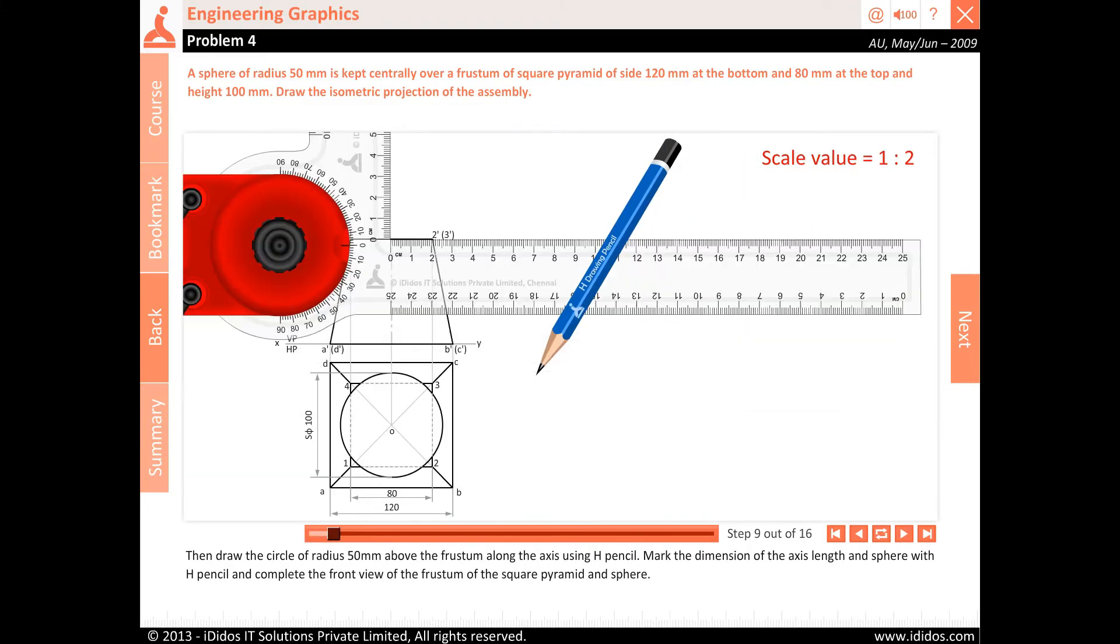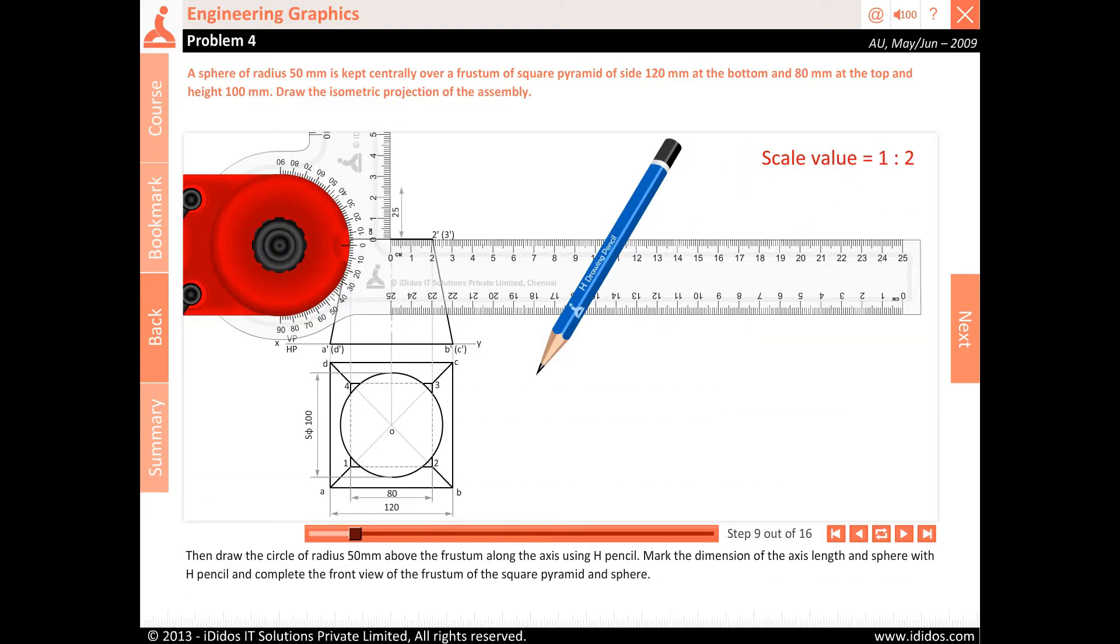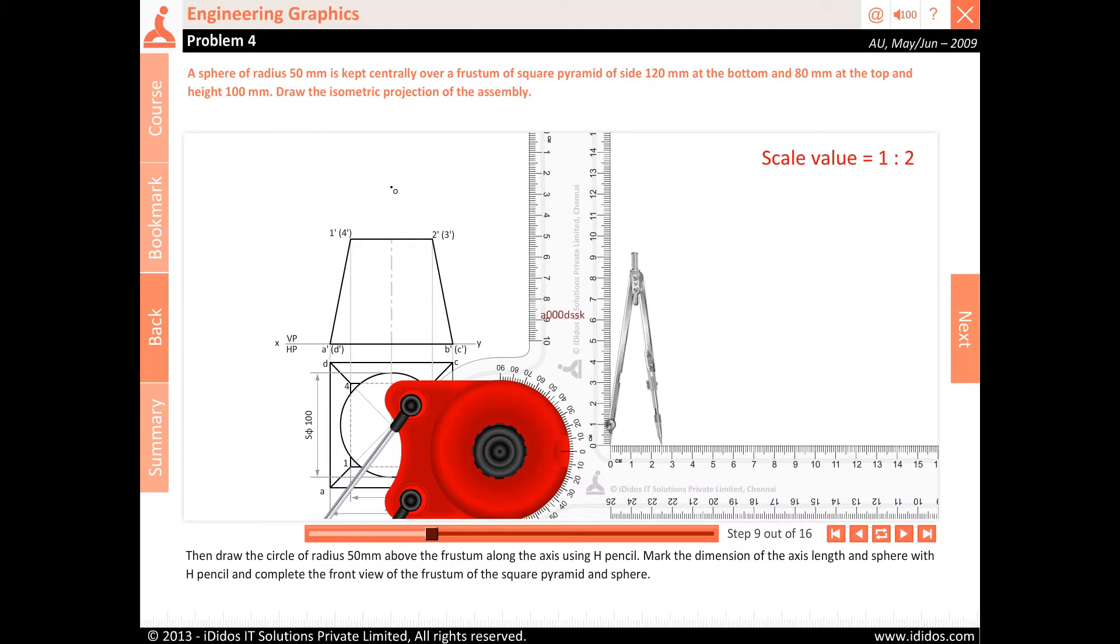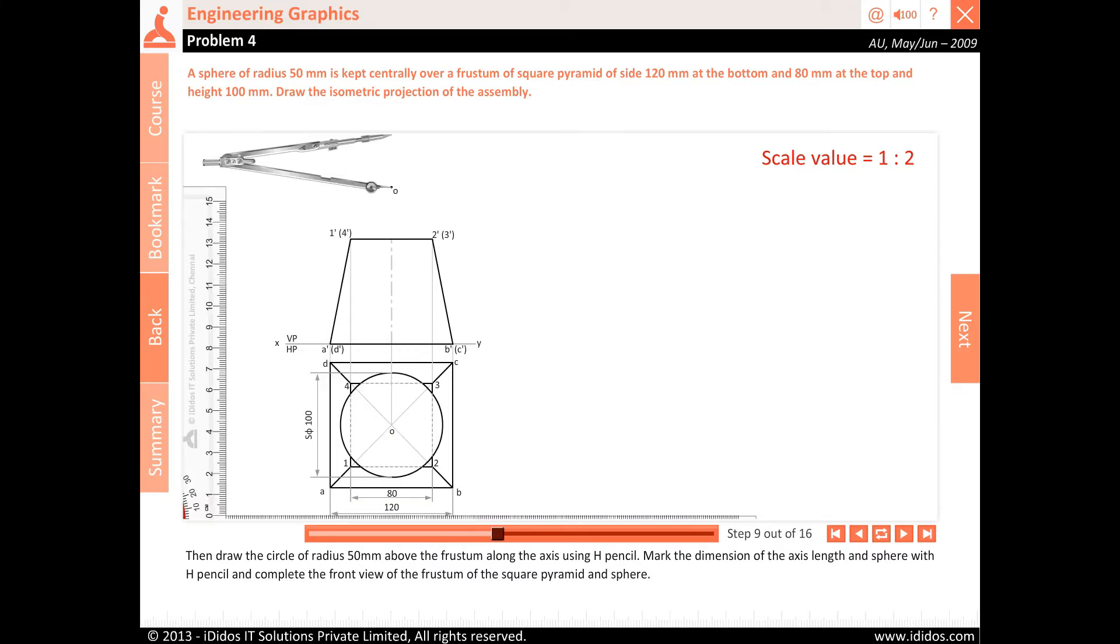Then draw the circle of radius 50 mm above the frustum along the axis using H pencil. Mark the dimension of the axis length and sphere with H pencil and complete the front view of the frustum of square pyramid and sphere.